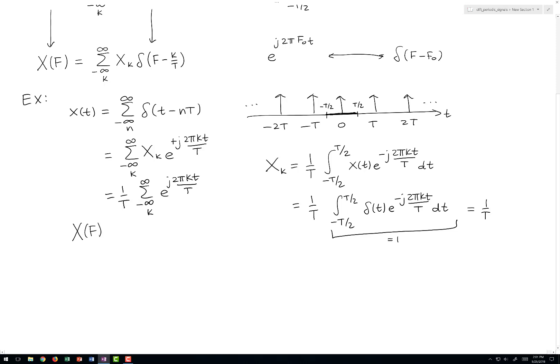So we'll say x of f is equal to 1 over T times this infinite sum, delta f minus k over T.